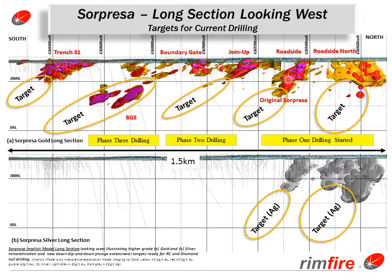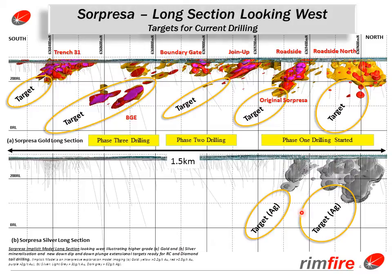This is the section through the model looking west and we have the names of the prospects along the long section of Supraza. Again you can see the position as it plunges and dips down to the east-southeast. We have separated the model in this slide between gold and silver, but gold and silver overlap at the roadside area as a co-joint system.